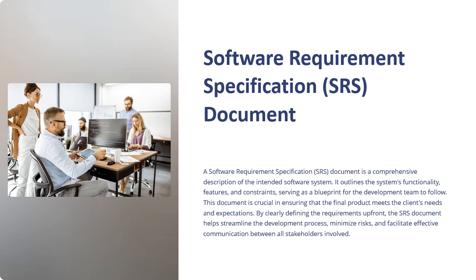A software requirement specification document, also known as an SRS document, is a comprehensive description of the intended software system. It outlines the system's functionality, features, and constraints, serving as a blueprint for the development team to follow. This document is crucial in ensuring that the final product meets the client's needs and expectations, by clearly defining the requirements upfront to streamline the development process, minimize risk, and facilitate effective communication between all stakeholders.